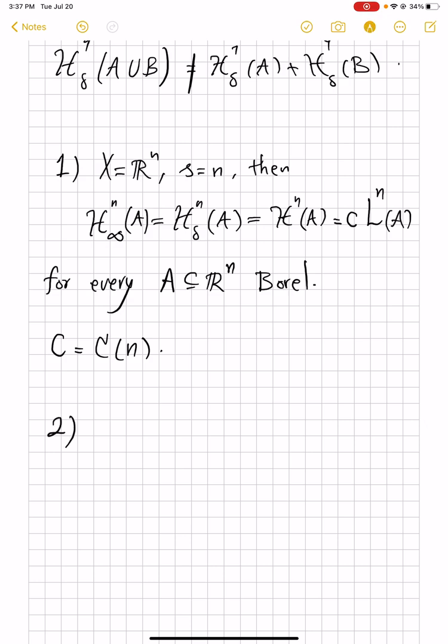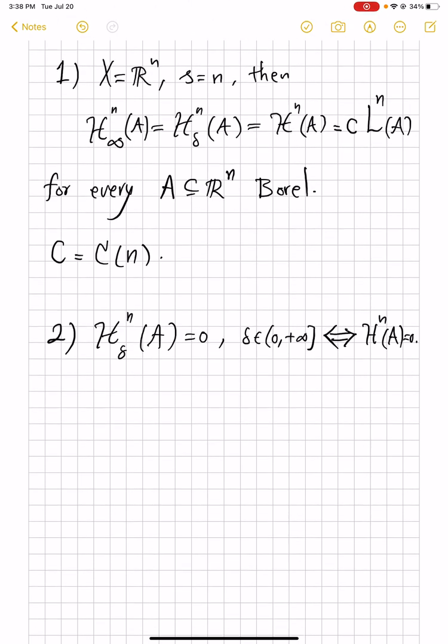So, the next property, which is true in general metric spaces and is very useful, is the fact that if H^s_δ of a set is zero, where δ can also be positive infinity, then H^s of A is zero. The reverse implication is an obvious one from the definitions, but the surprising part is that if the content for some δ is zero, then all the H^s_δ's will be zero for previous ones.